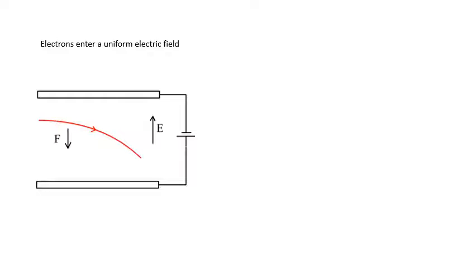E over m is the specific charge. This is what J.J. Thomson did. Bit of revision now: electrons entering a uniform electric field at right angles to the field.